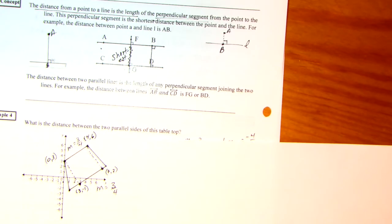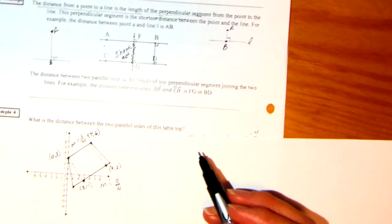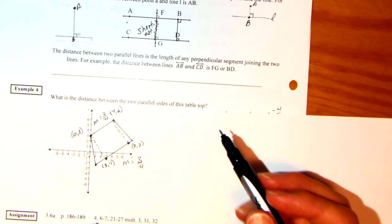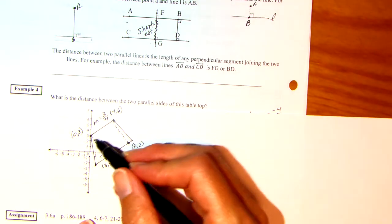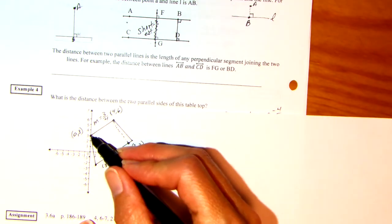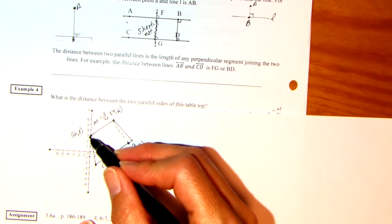Now if I look at this picture, the distance between the two parallel lines is the length of any perpendicular segment joining the two lines. For example, the distance between this line and this line is perpendicular, which would be FG or BD. So this is the shortest distance. All right. So how can we use this information? Example four. This appears to be a trapezoid.